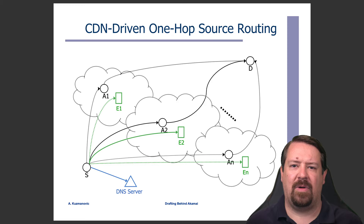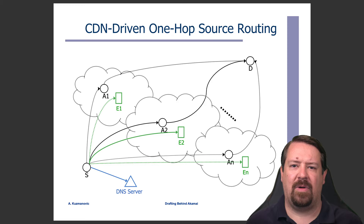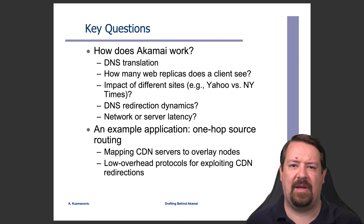Our case study here is CDN-driven one-hop source routing — a detour-type routing to provide alternatives to the default BGP path between a particular source and destination. In each of these clouds, we have an overlay router located somewhat closely to an Akamai point of presence. Akamai uses multiple layers of DNS to decide where a particular request should be served and to distribute load across multiple servers and network links. We'll now focus on our example application: the one-hop source routing.